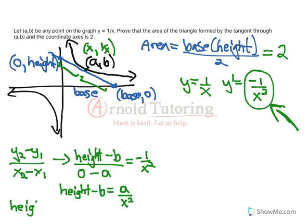So height is going to equal B plus A over X squared. Now remember that we renamed these points, A and B. So I'm just going to replace B with 1 over X and A with X. So A becomes X over X squared.